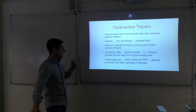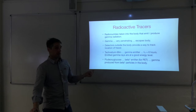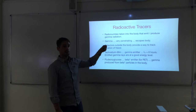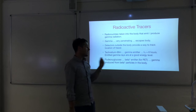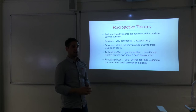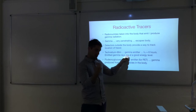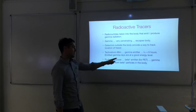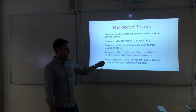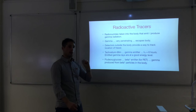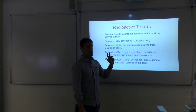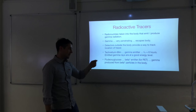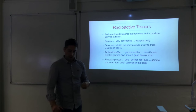Fluorodeoxyglucose is a beta-plus emitter, not a direct gamma emitter. It is used in PET — positron emission tomography. When the beta-plus particles are emitted in the body, they annihilate with naturally occurring electrons, producing gamma photons. You can get extremely good images from PET scans, and this is a common tracer for that method.